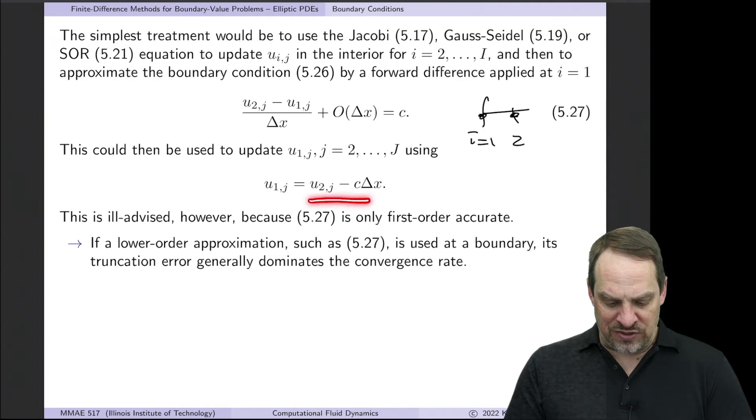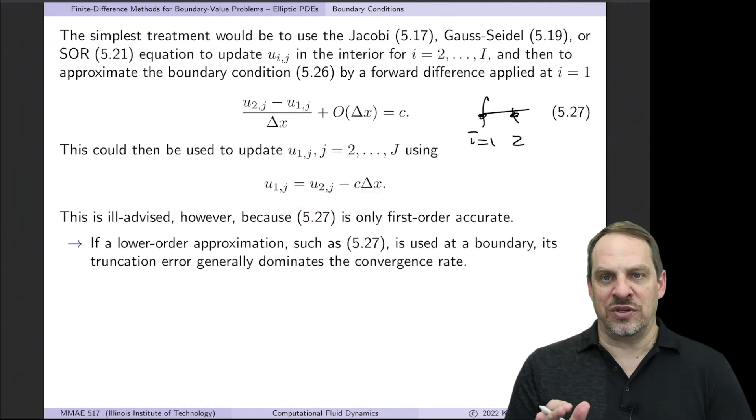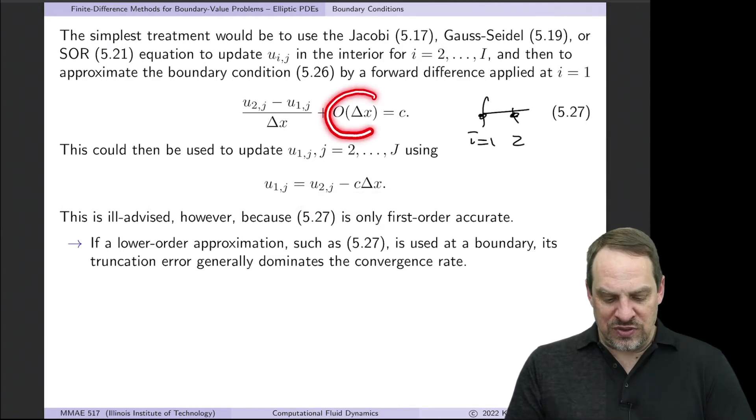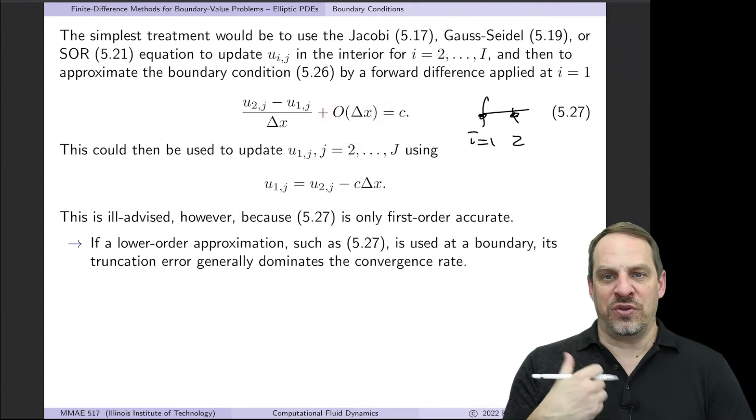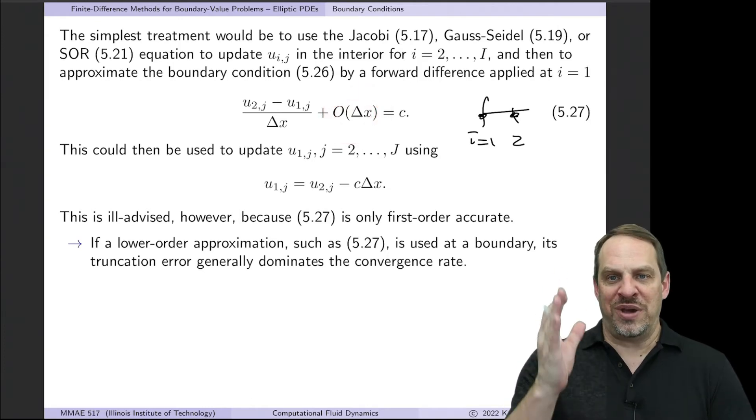That's given by this expression. Everything is known. But what you'll notice is this is only a first order approximation for the first derivative. And you say, well, that's only for the boundary points. The interior points are still second order accurate. So what's the problem?